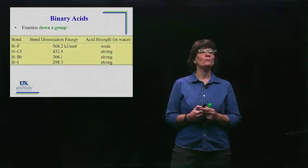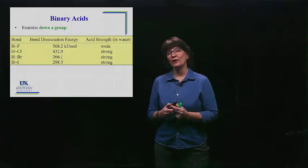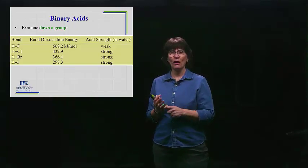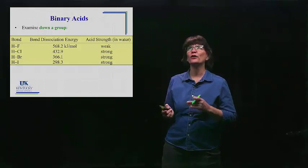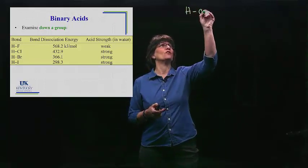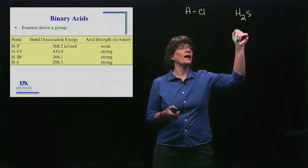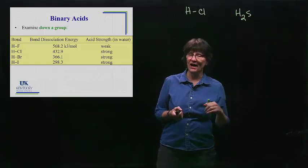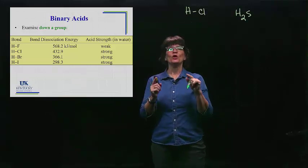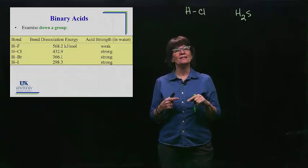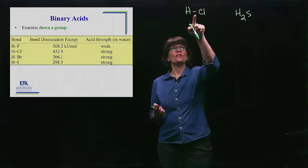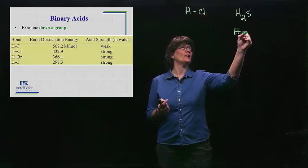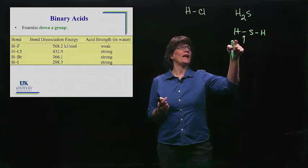We're going to start with binary acids. When you're looking at binary acids, we're talking about one element connected to hydrogen. It doesn't have to be a diatomic molecule — we have all diatomic molecules here with HCl and so forth, but it could be something like H2S. A binary acid has hydrogen and one other element. When we look at binary acids, we're going to be examining the bond strength — the strength of the bond between the H and the Cl, or in H2S, the bond between the H and the S.